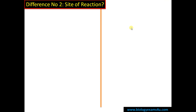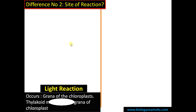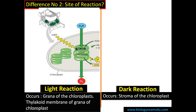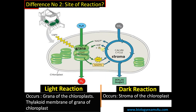Difference number two regards the site of reaction. Light reaction occurs on the grana of the chloroplast. This structure is called grana and the individual units of grana are called thylakoid, placed one above the other. Therefore, the precise location is the thylakoid membrane of the grana of the chloroplast. Whereas dark reaction occurs in the stroma of the chloroplast, where carbon dioxide is converted to glucose.